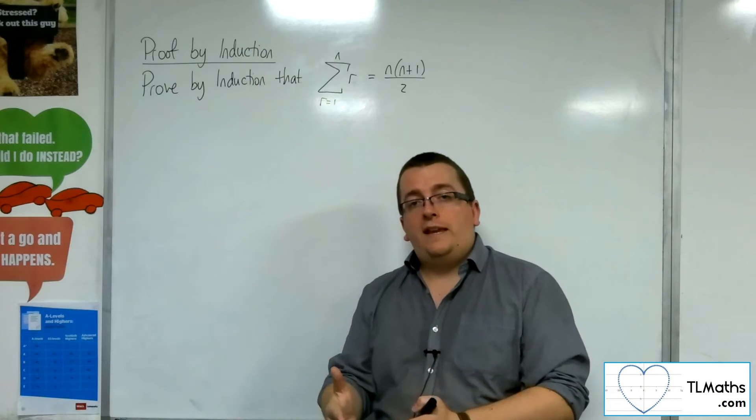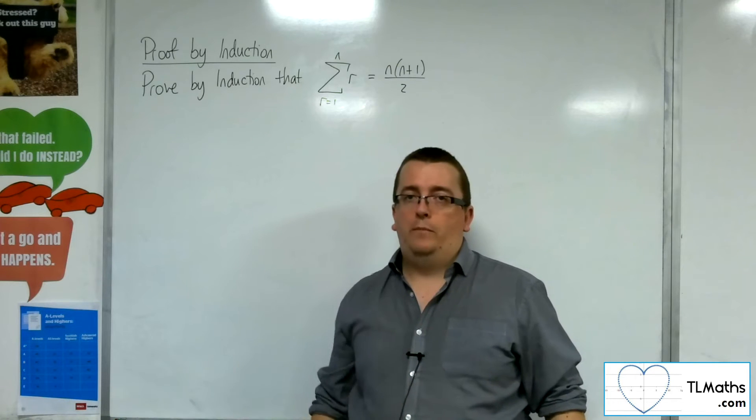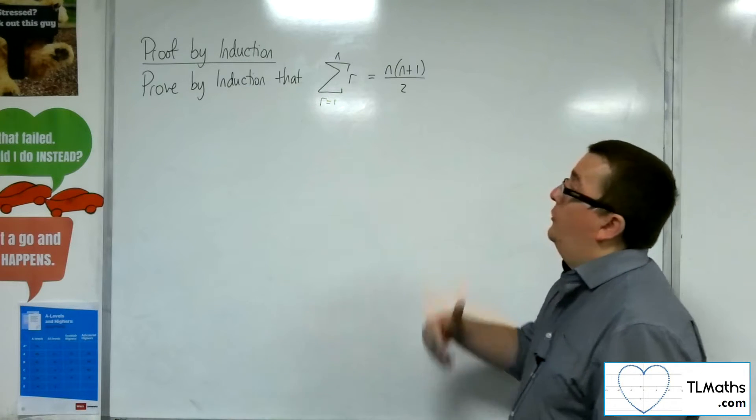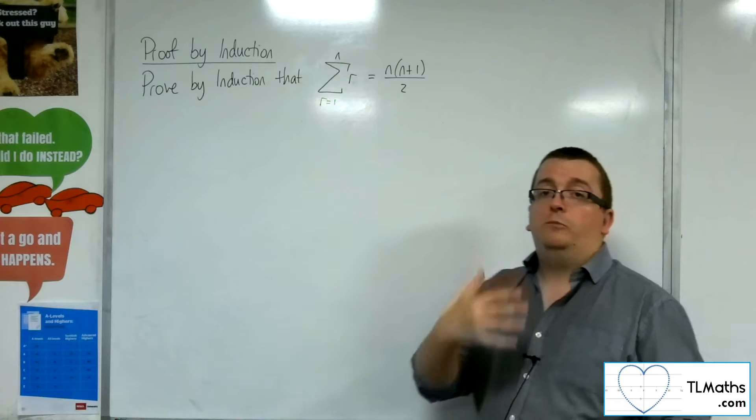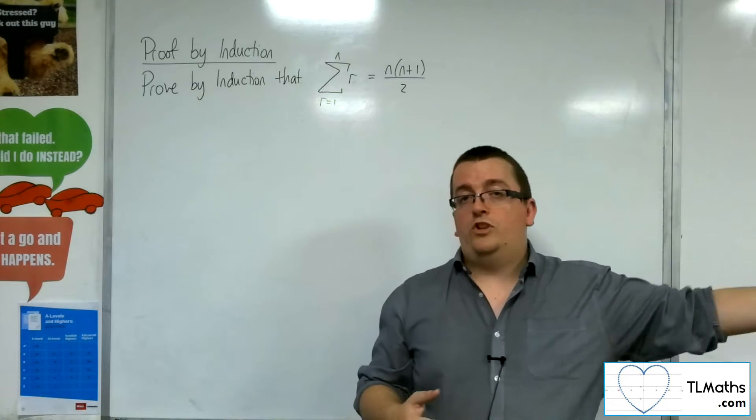So what we're looking at here is the sum of the first n natural numbers. So 1 plus 2 plus 3 plus 4 plus 5 plus 6 plus 7, etc., all the way to as far as you want up to whichever number n.